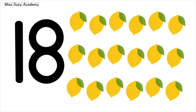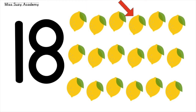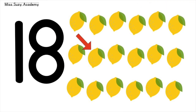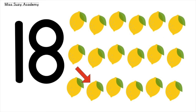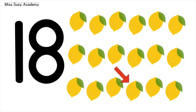18 lemons. 1, 2, 3, 4, 5, 6, 7, 8, 9, 10, 11, 12, 13, 14, 15, 16, 17, 18. 18 lemons.